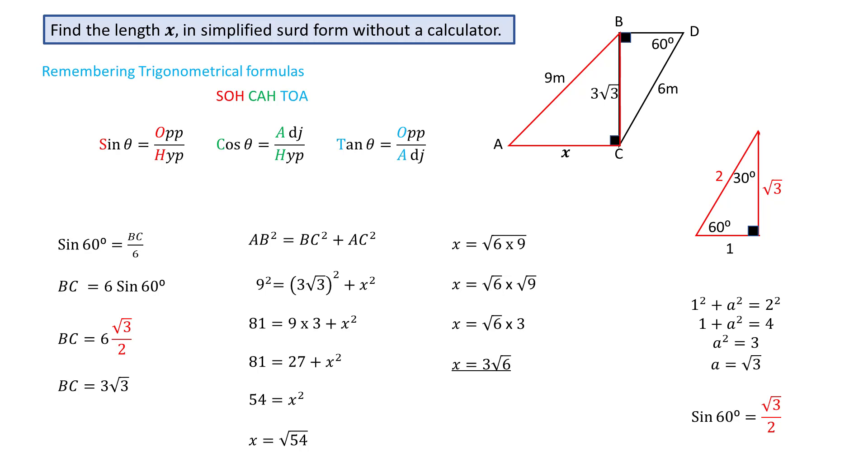The problem was solved by first remembering the trig formulas, finding the trig ratio for sin 60, using trigonometry, Pythagoras, and simplifying the surd.